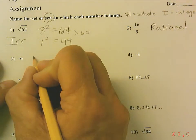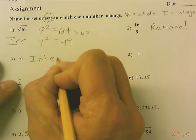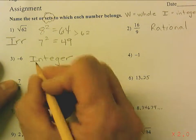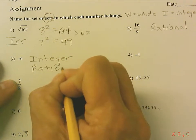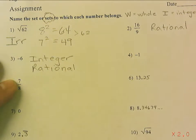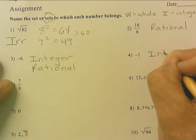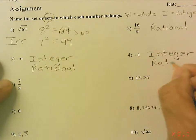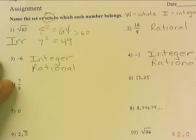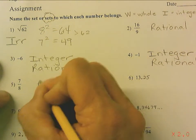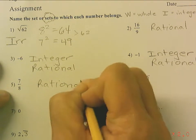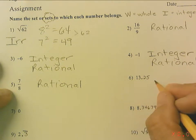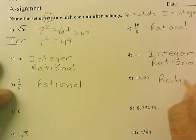Negative 6 is an integer. It's not a whole number because a whole number wouldn't be negative, but because it's an integer, it's automatically rational. Negative 1 — same thing: it's an integer, and since it's negative it's not a whole number, but anything that's an integer is automatically rational. 7 eighths is already a fraction, which makes it rational. 13.25 is a terminating decimal, and a terminating decimal is automatically rational.